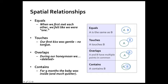You can have A touching B. Our first kiss might be very gentle, no tongue. You can have overlapping relationships. That's where A and B have multiple points in common, like during your honeymoon. And that something might lead you to the contains relationship, where A contains B. So for nine months the baby might be inside and way quieter.